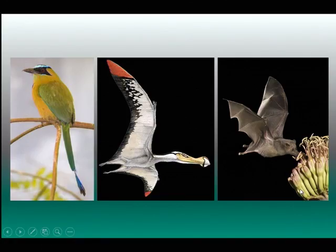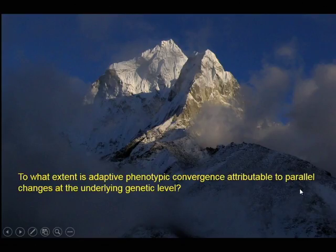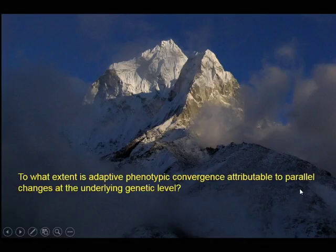The convergent evolution of organismal phenotypes, like the capacity for powered flight, has always been of interest to evolutionary biologists. These patterns of phenotypic convergence have a fairly conventional evolutionary explanation: if a given design is good enough to evolve once, then the same underlying design principle is typically good enough to evolve multiple times. An important question in evolutionary genetics concerns the extent to which adaptive phenotypic convergence is attributable to parallel changes at the underlying genetic level. One especially powerful means to address this question is to examine phylogenetically replicated changes in protein function that can be traced to specific amino acid substitutions, allowing us to establish a direct mechanistic connection between genotype and phenotype.